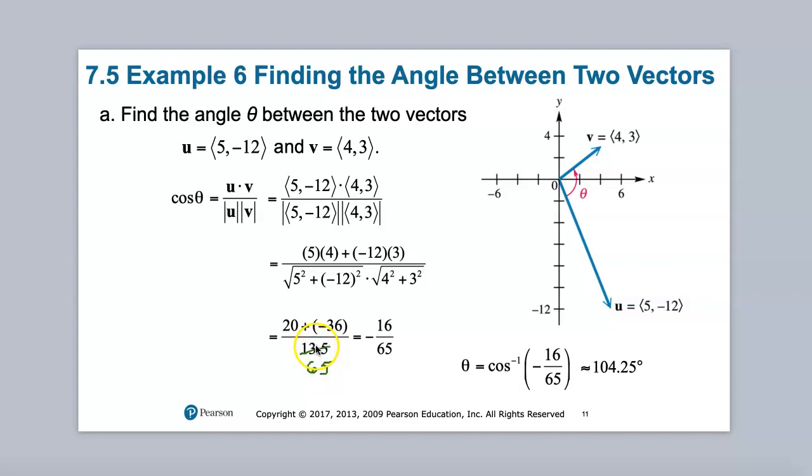They mean to say 13 times 5, but the way that they wrote 13 times 5, it looks like 13.5. So 13 times 5 is 65. And then we end up with saying that that theta is then the cosine inverse of this resulting number negative 16 over 65. And that's how we find the angle between the two vectors. So it's an alternative way as opposed to using the law of cosines.